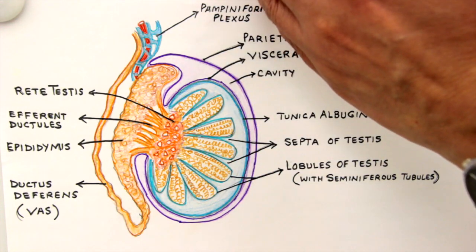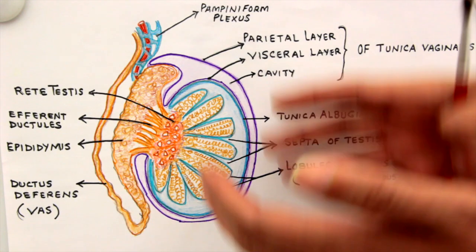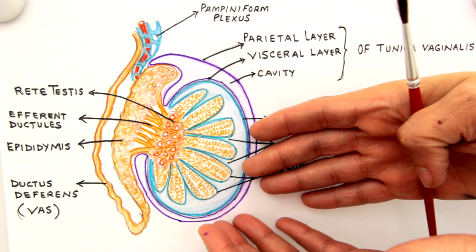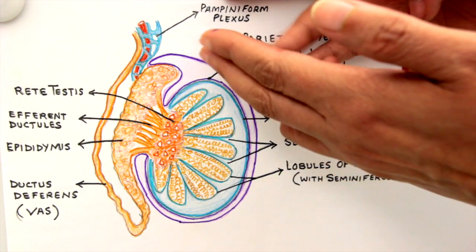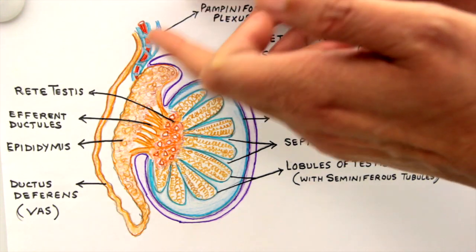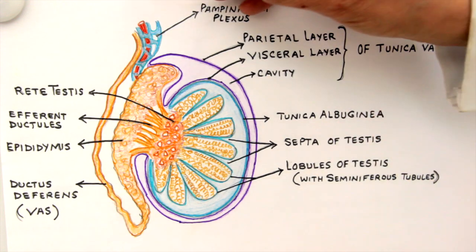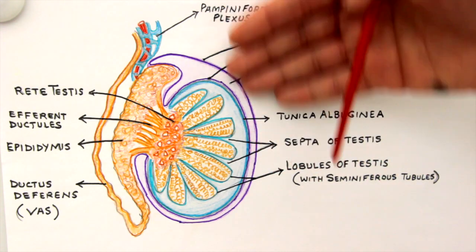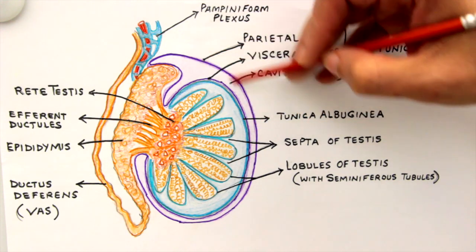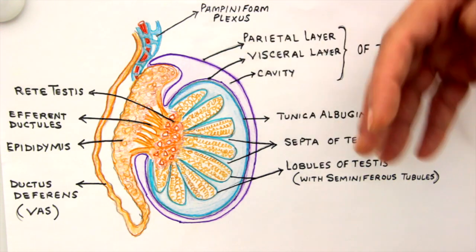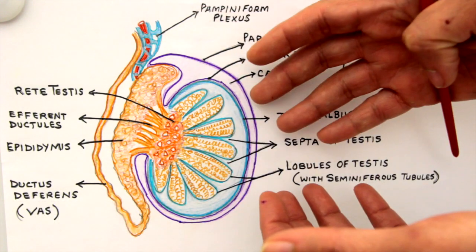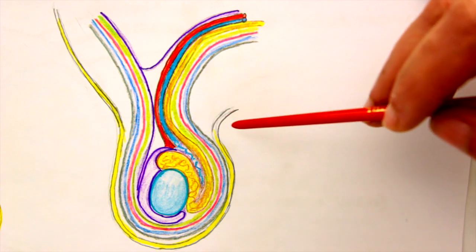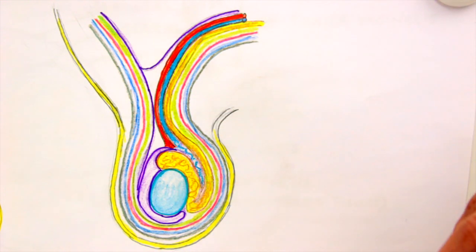The tunica vaginalis is a closed peritoneal sac — once the testes have descended into the scrotum, this sac is sealed off and there is no communication between the abdominal peritoneum and the tunica vaginalis. However, sometimes developmentally the complete sealing off doesn't happen, so there is trickling down of peritoneal serous fluid and accumulation beyond the required amount into the two layers of the tunica vaginalis. This condition is known as a hydrocele.